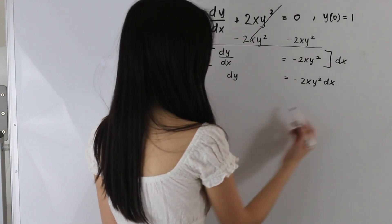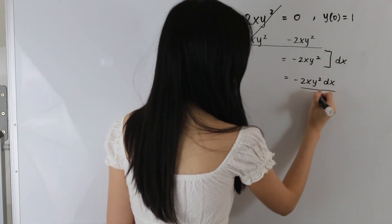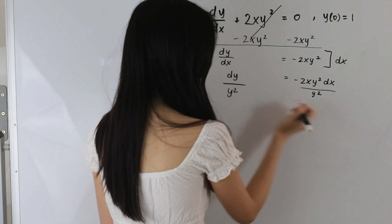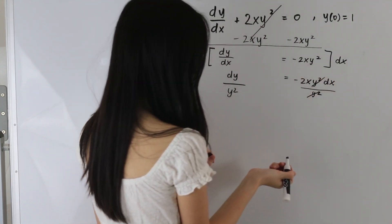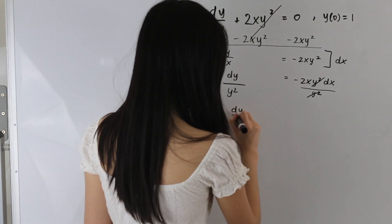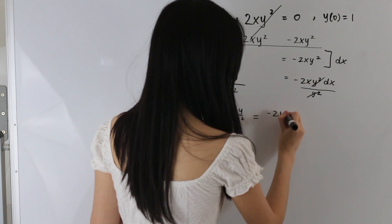Let's get our y's on the other side. So we're going to divide this entire thing by y squared, and we're going to divide this side by y squared as well. And so these two y squareds cancel out, and we are left with dy over y squared is equal to negative 2x dx.